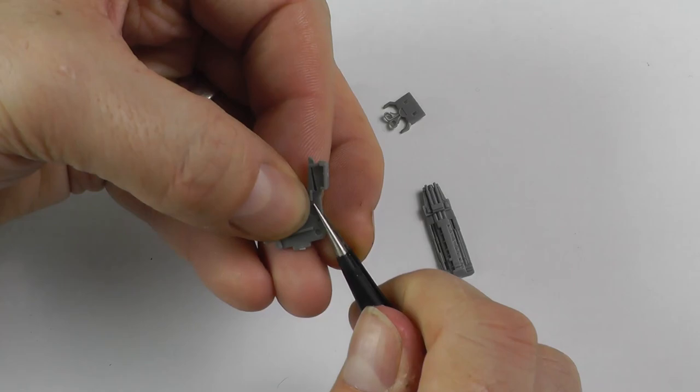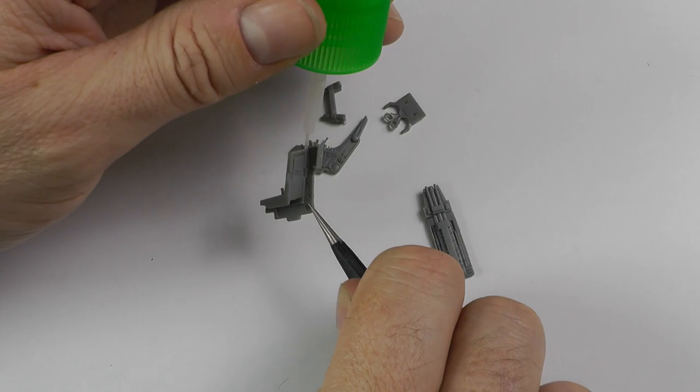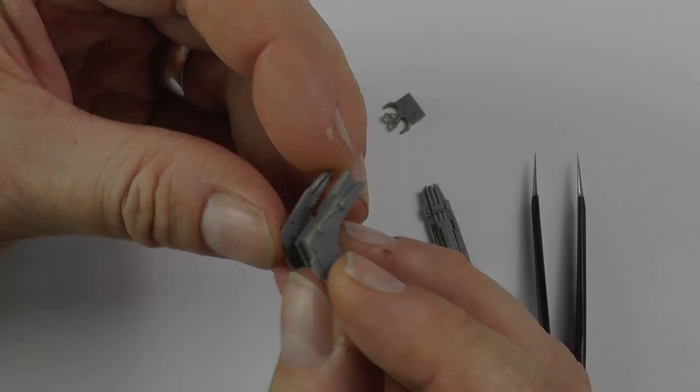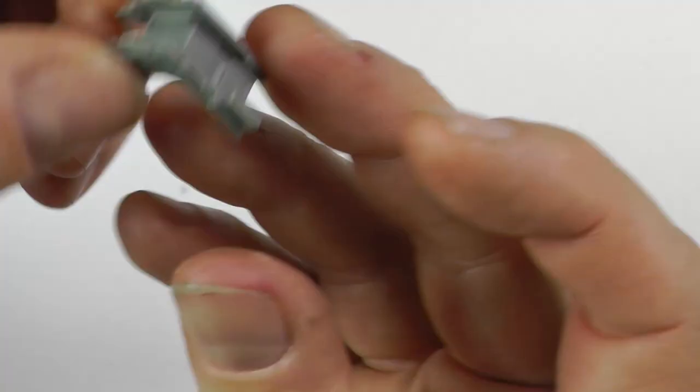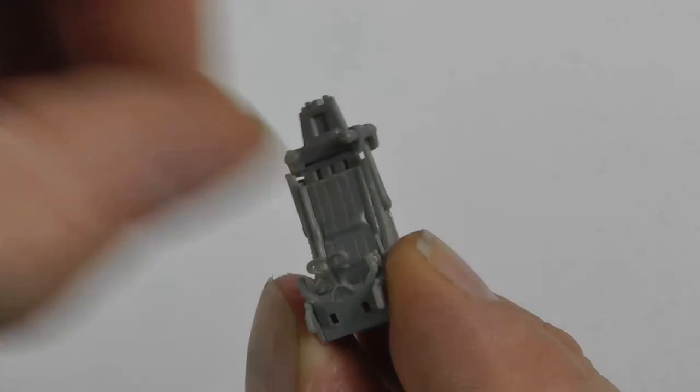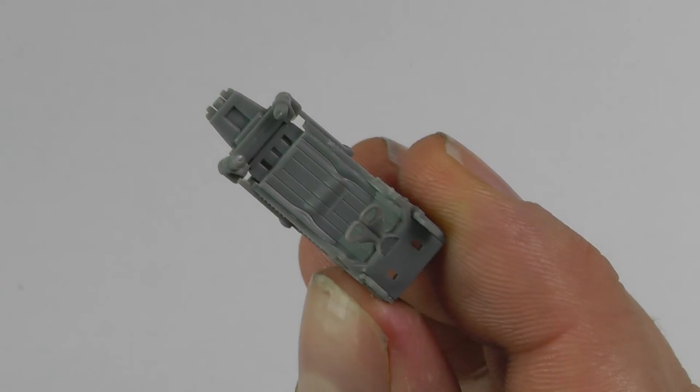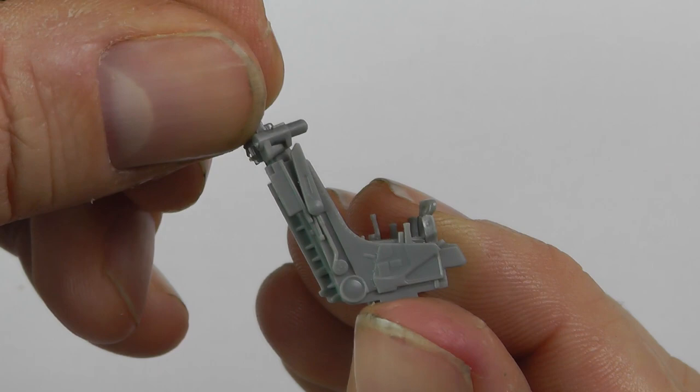So here we are, I've fast forwarded this or sped it up. It's just a case of using Tamiya Extra Thin Cement, getting the ejector seats put together. Fantastic detail, I didn't see the need to buy any aftermarket parts because the seats and tubs that come with the kit are more than adequate. They've got excellent detail and they're very accurate as well. Just speeding through, applying the glue, letting it do its chemical reaction, getting everything together.